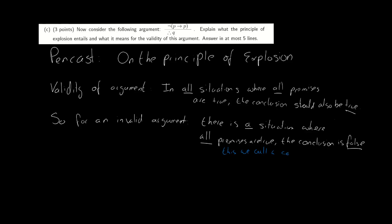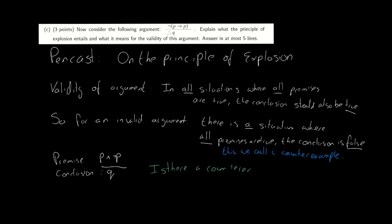When no counter-example exists, an argument must be valid. Now imagine that we have the argument: p and not-p, therefore q. In this argument there is no situation in which all of the premises are true.